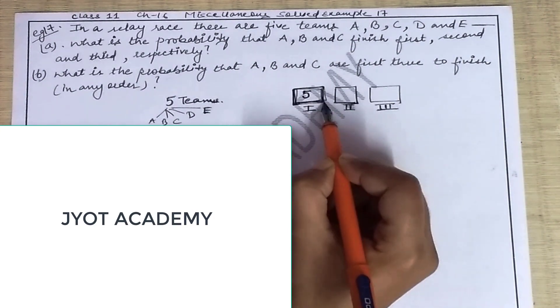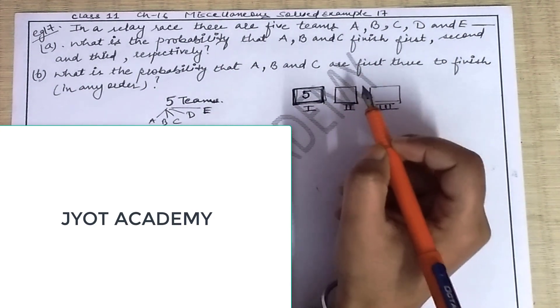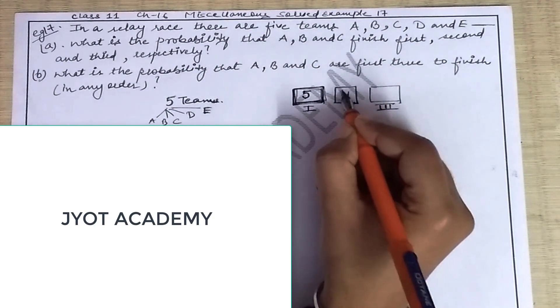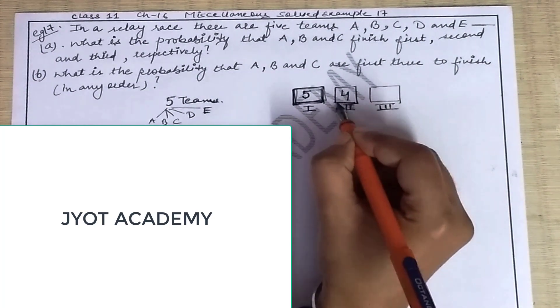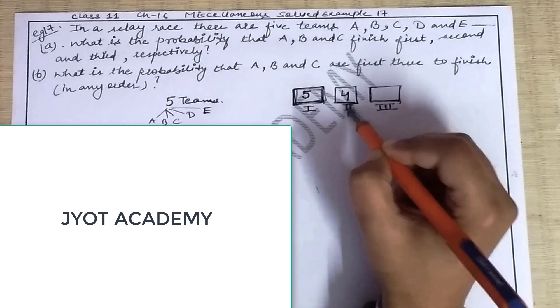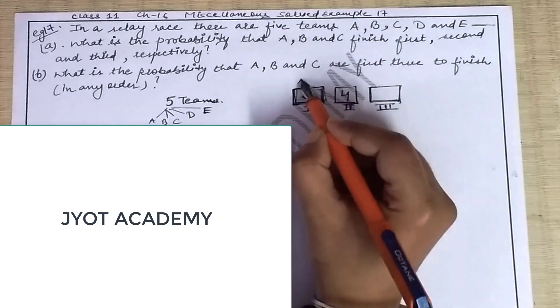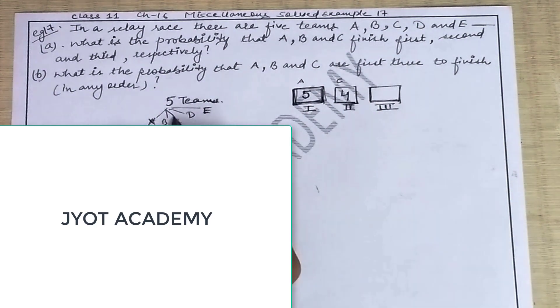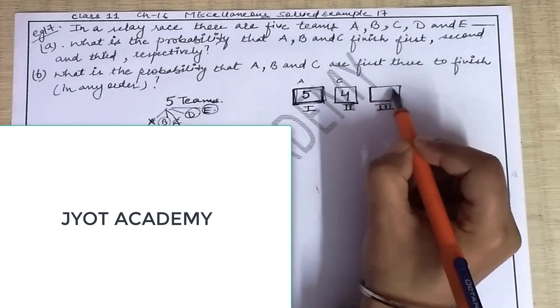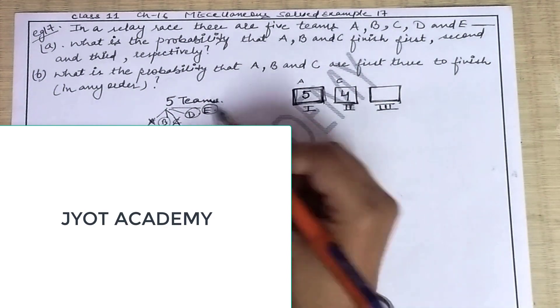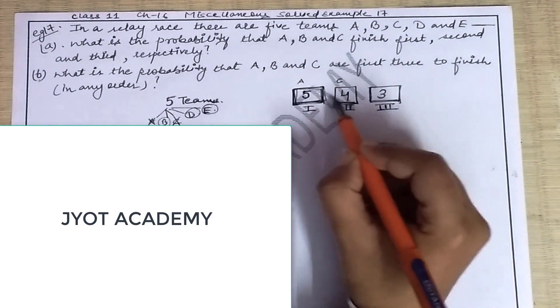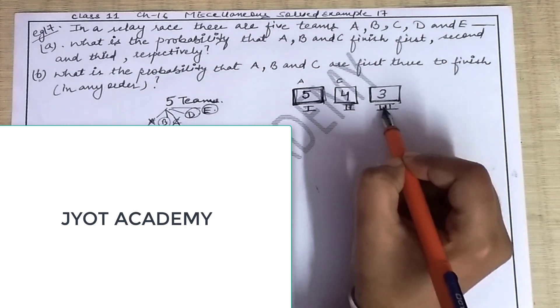But one team has already come here. There are five teams, so how many remain? Four teams. Any of the four teams can hold the second position, so I have only four choices for a team to hold second position. First and second positions are taken - suppose A holds first position and C holds second position. So A and C already hold positions. The remaining teams are B, D, E. So three teams can take third position, and it can be any of them. So I have three choices for a team to hold third position. Since I have only three positions, there are five into four into three ways.